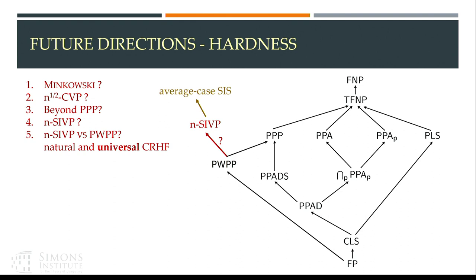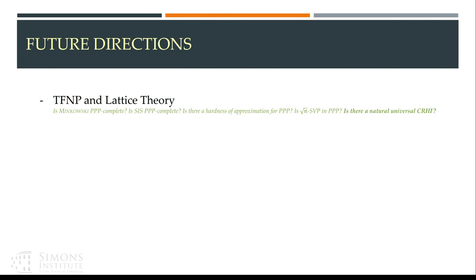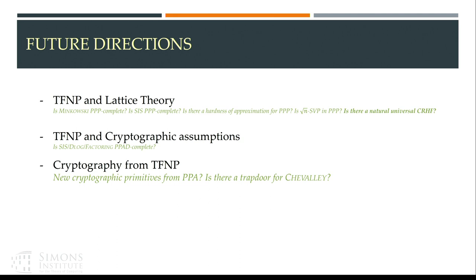To conclude, the open problems lie in the intersection of TFNP and lattice theory, or TFNP and other cryptographic assumptions. Another very interesting direction is whether we can build new cryptographic primitives using TFNP and the structure of TFNP problems. Thank you.